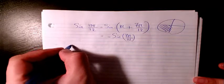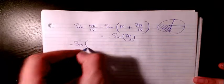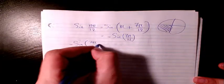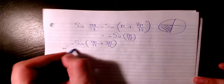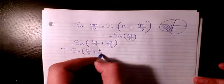It's going to be negative sine 4 pi over 12 plus 3 pi over 12, or we can say negative sine pi over 3 plus pi over 4.